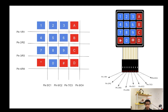Pin number 2, R2, stands for values 4, 5, 6, and B. Pin number 3, R3, has values 7, 8, 9, and C. Finally, pin number 4 initializes all values of row number 4, which is the asterisk sign, 0, hashtag, as well as D.